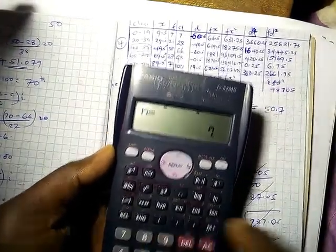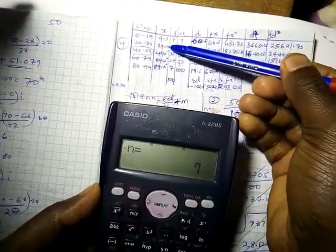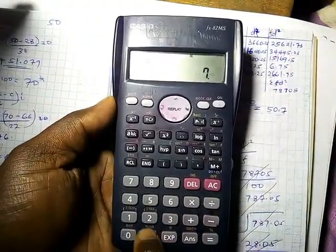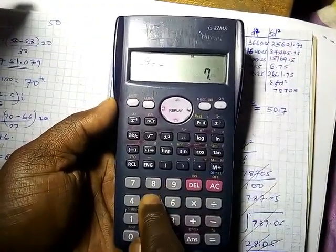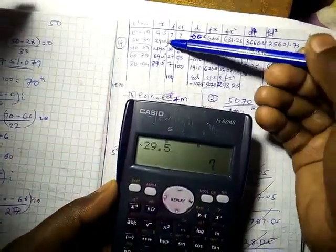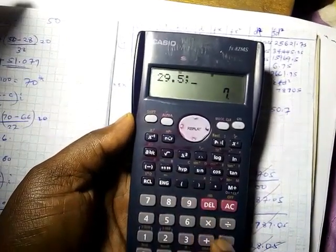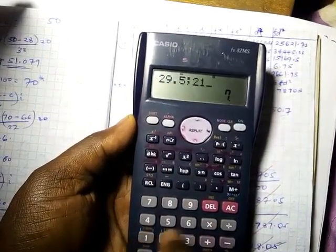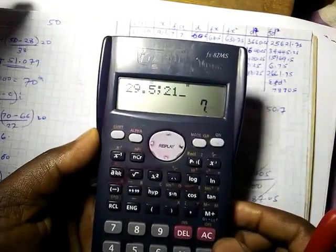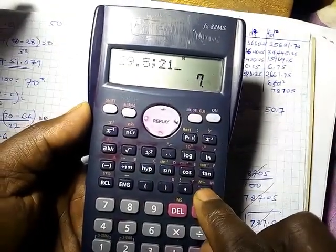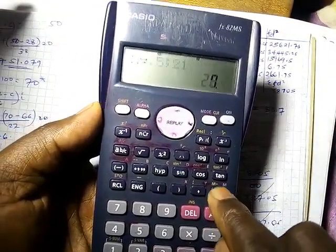The next number is 29.5, so 29.5 has a frequency of how many? 21. So when you shift this, 21, you add M plus.